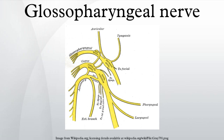Overview of branchial motor component: The branchial motor component of CN9 provides voluntary control of the stylopharyngeus muscle, which elevates the pharynx during swallowing and speech. Origin and central course: The branchial motor component originates from the nucleus ambiguus and the reticular formation of the rostral medulla. Fibers leaving the nucleus ambiguus travel anteriorly and laterally to exit the medulla, along with the other components of CN9, between the olive and the inferior cerebellar peduncle.